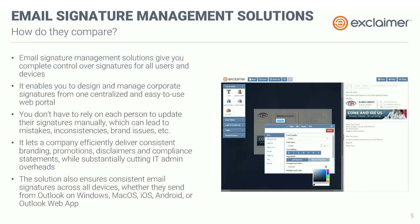Moving forward, let's see how that compares to an email signature management solution. Is Outlook roaming signatures a replacement for your email signature management solution? Personally, I don't believe it is. First of all, email signature management solutions give you complete control over signatures for all users and devices, something which the Outlook roaming signatures feature won't do. These third-party solutions also enable you to design and manage corporate signatures from one centralized and easy-to-use portal, which means you don't have to rely on each person to update their signatures manually — which could lead to mistakes, inconsistencies, and brand and compliance issues.